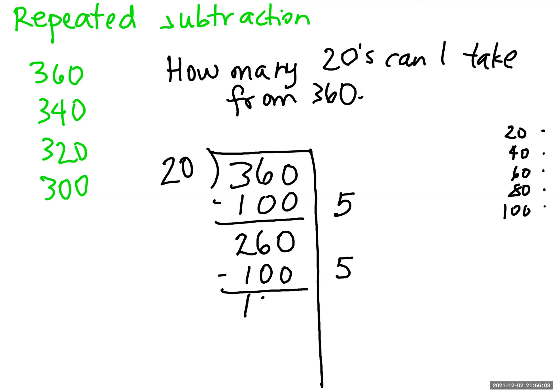And then I have 160. Okay, I can take away another 100. That's 5 twenties. And then I'm left with 60. Okay, 20, 40, 60. That's 3 times 20 is 60. I have no more 20s I can take.